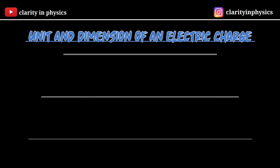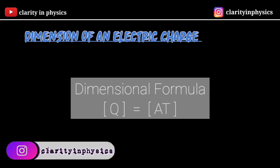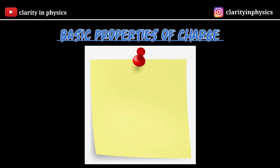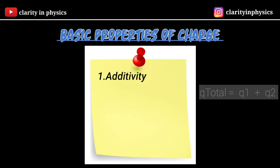Now let us discuss the basic properties of charge. The first one is additivity: if a system contains two point charges q1 and q2, the total charge of the system is obtained simply by adding algebraically q1 and q2. That is, charges add up like real numbers — they are scalars, like the mass of a body.